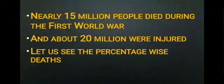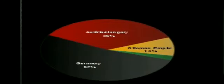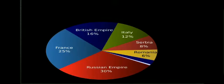Nearly 15 million people died during the First World War and about 20 million were injured. Let's see the percentage-wise deaths. Central Powers: Austria-Hungary 35%, Germany 52%, Ottoman Empire 10%. Allied Powers: British Empire 16%, Italy 12%, Serbia 8%, Romania 6%, Russian Empire 30%, and France 25%.